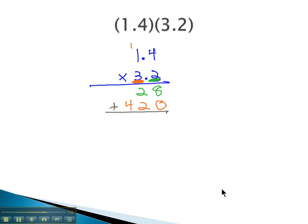And then we know we need to add these together. 8 and 0 is 8, 2 and 2 is 4, and just a 4 at the end. And then to decide where we place the decimal, we need to count our decimal digits. 1 from the first problem,